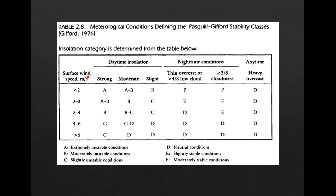For example, during daytime you have either strong, moderate, or slight insolation. Combined with the surface wind speed, you will know what your stability class is on that day — either A, B, C, or D. As you can see in this table, which we call the meteorological condition of the Pasquill-Gifford stability classes, during daytime the stability classes only belong to class A until class D. There is no E or F class during daytime, no matter what your wind speed is.